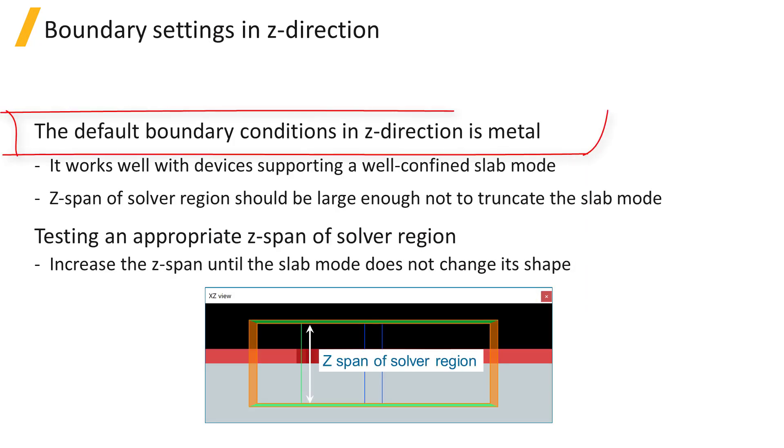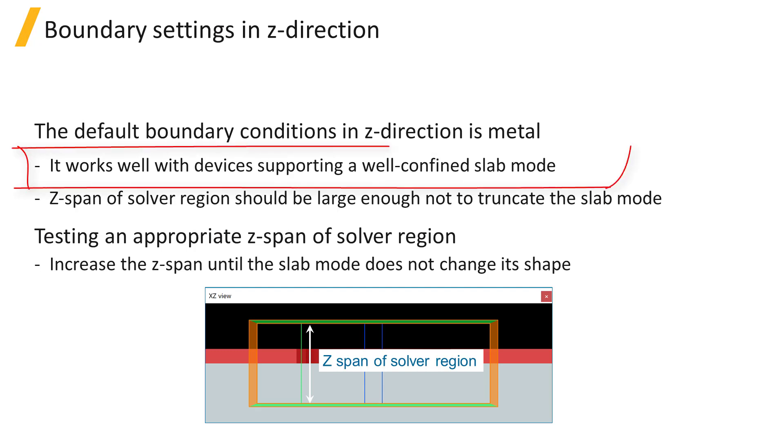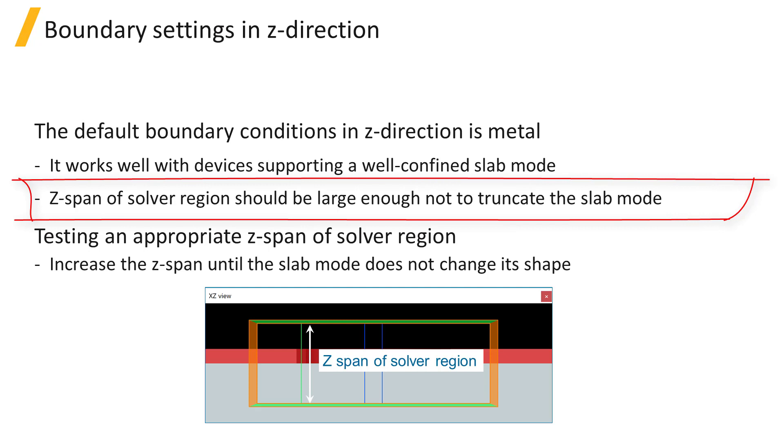By default, the boundary conditions in the Z direction are set to metal. This works well since the fields in the device are confined within a slab in the XY plane and do not radiate out in the vertical direction. As long as the Z-span of the solver region is large enough that the full field profile of the slab mode can be included without truncating the fields at the Z-min and Z-max boundaries, then metal boundaries can be used.